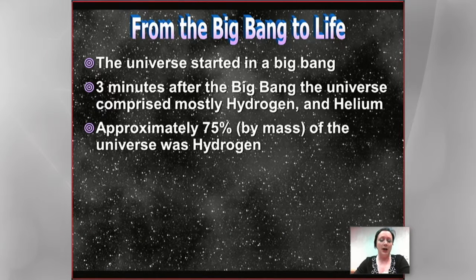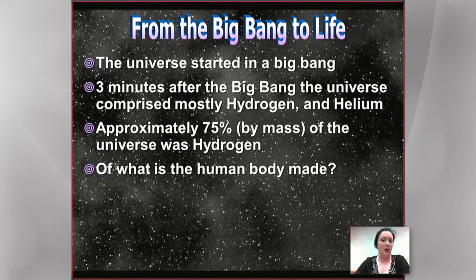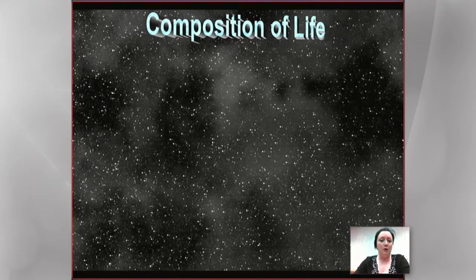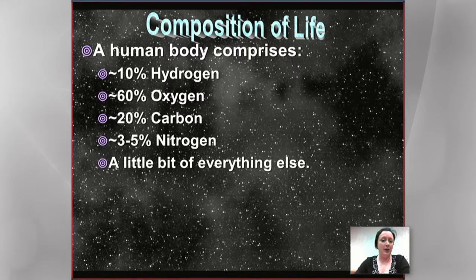In the universe, hydrogen is by far the most abundant thing — 75% by mass, 93% by number of atoms. It's really abundant. But in terms of planets and life, it's not so abundant. We are made of only 10% hydrogen. We're mostly oxygen, quite a lot of carbon. We actually contain a little bit of just about everything in varying amounts, but mostly we're oxygen and carbon, and so we need to know where that comes from.